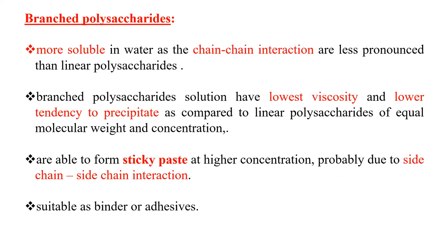Branched polysaccharides are more soluble in water as chain-chain interactions are less pronounced than in linear polysaccharides, due to side chains joined with alpha-1,6 glycosidic linkage. Their solutions have lower viscosity and lower tendency to precipitate compared to linear polysaccharides of equal molecular weight and concentration. They are able to form sticky paste at higher concentration, probably due to side chain-side chain interaction.